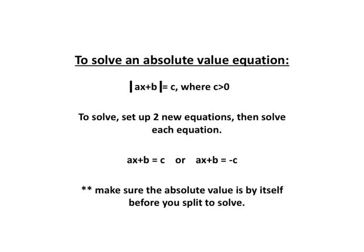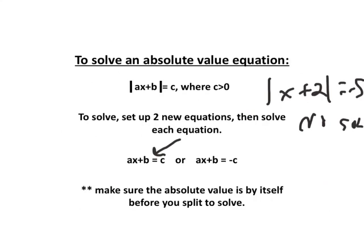To solve an equation of the form |ax + b| = c, c must be greater than 0 — it cannot be negative. If you see an absolute value equal to a negative number, it's automatically no solution. To solve, set up two equations: the first is the same as the problem just without the bars; the second is the same as the first except you change the isolated number to its opposite. Make sure the absolute value is by itself before you split and solve.